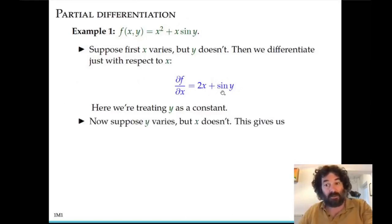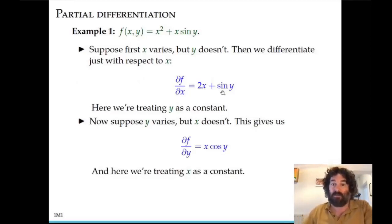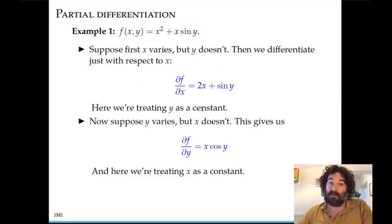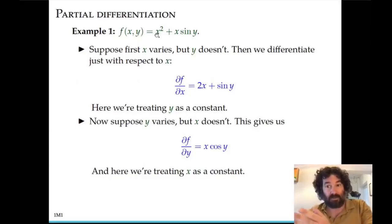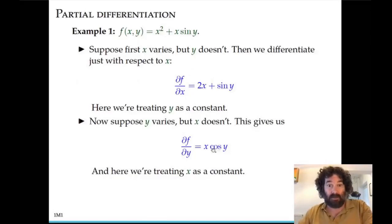You can also take the derivative with respect to y, in which case you hold x constant and vary y. The partial derivative of f with respect to y would be x times cosine of y. The first term, x squared, does not depend on y, so it contributes zero. In the second term, x times sine of y, the derivative of sine of y is cosine of y, leaving x times cosine of y.